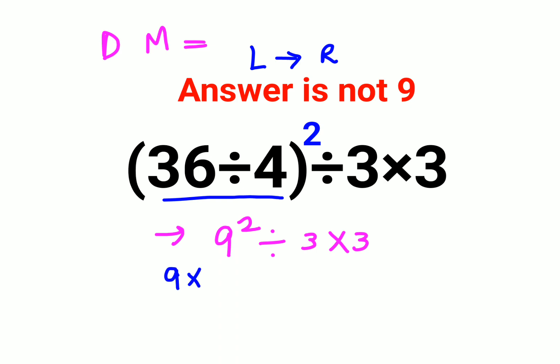So first we will do 9² divided by 3, that means 9×9÷3×3. The 3s cancel, so this eventually comes out to be 9×3×3, so the answer comes out to be 81.